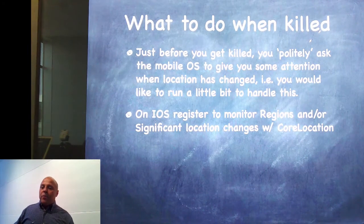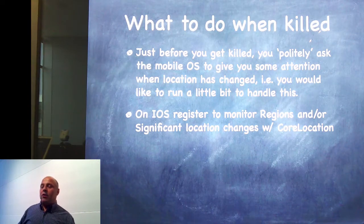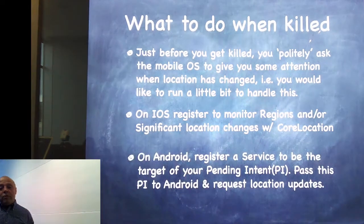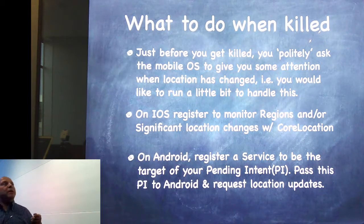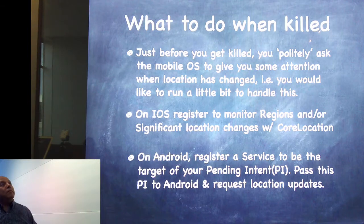On iOS, you register to monitor for regions and significant location changes, and you register this with Core Location. On Android, you register as a service to be the target of a pending intent, and then you pass the pending intent to Android when you request location updates.